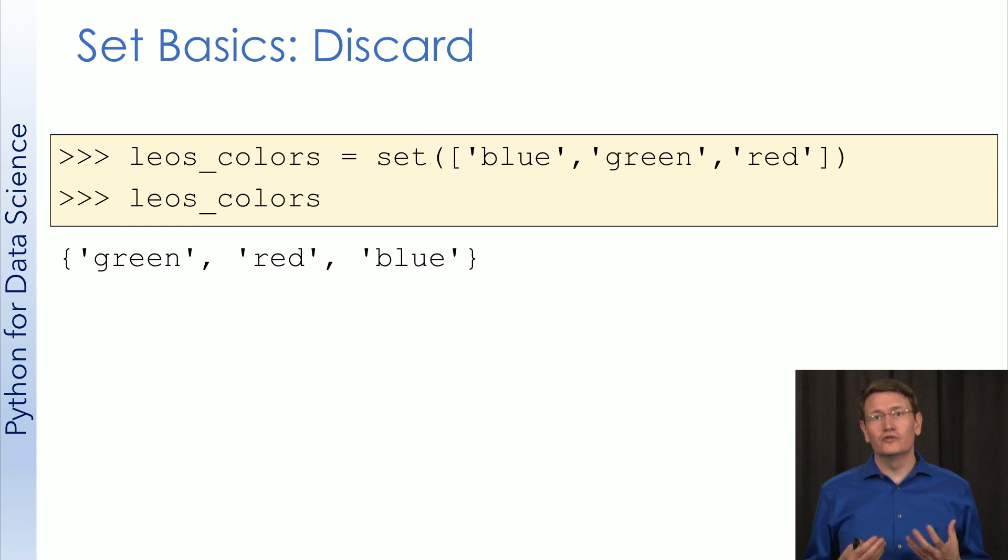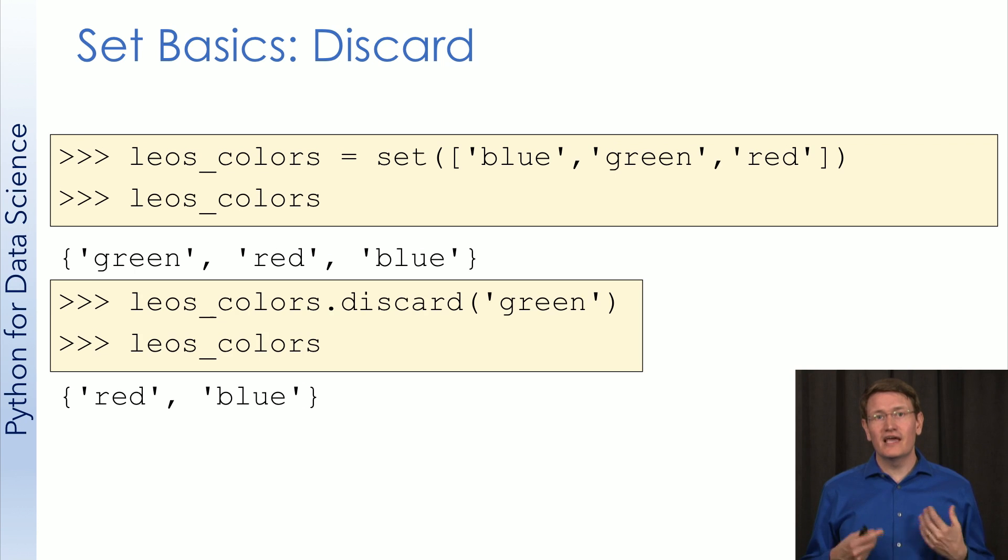Starting with that original list, we can remove items by using either the remove or discard method. Looking at discard, you simply want to pass it the element you want discarded and it will remove it.